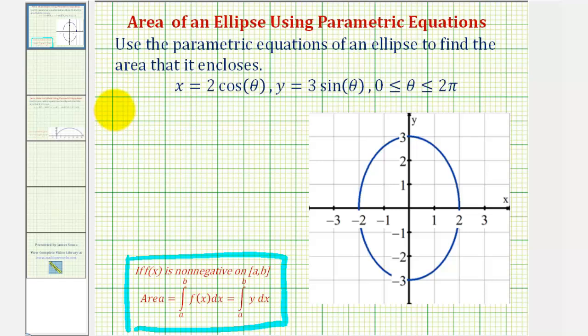So starting with this definite integral, we know that y is equal to three sine theta, and now we can find dx since we're given x equals two cosine theta.